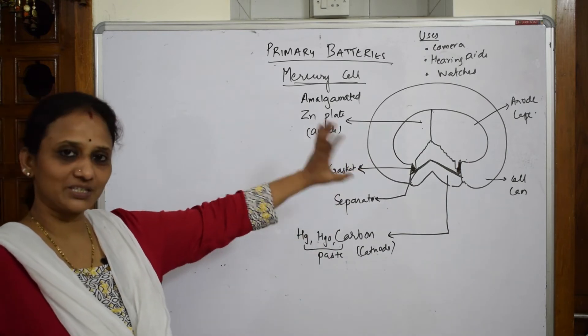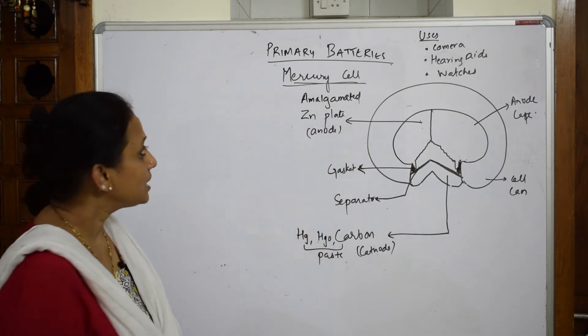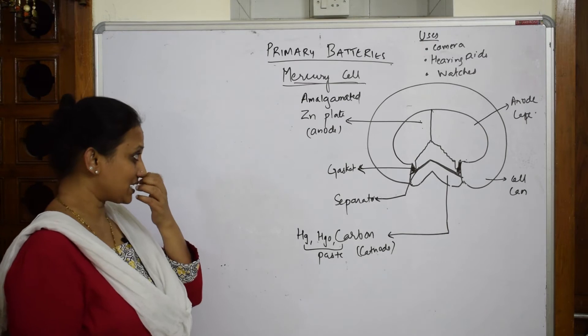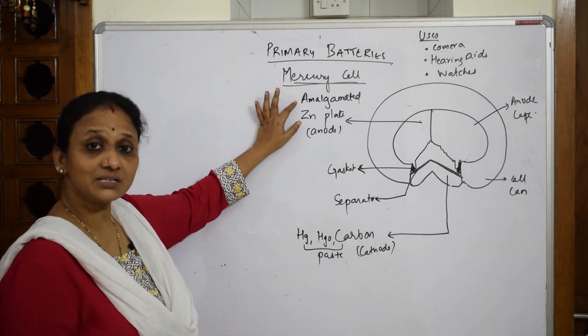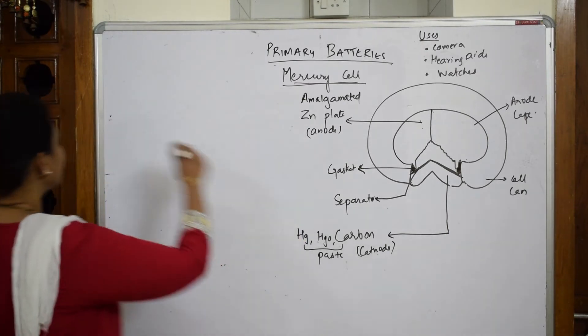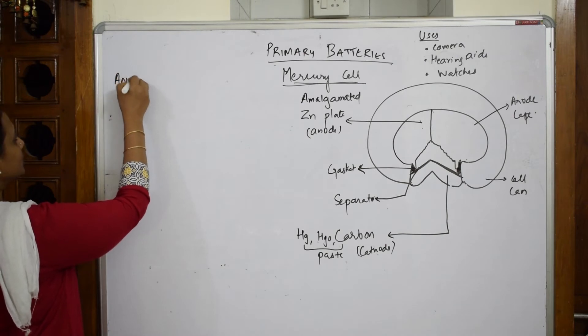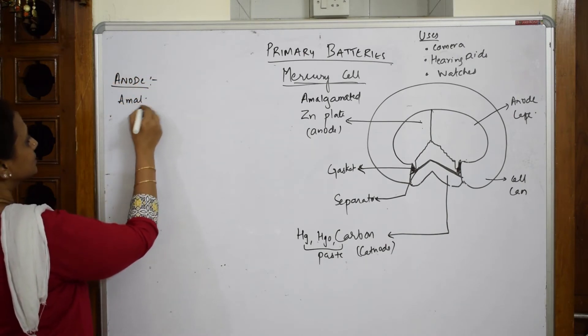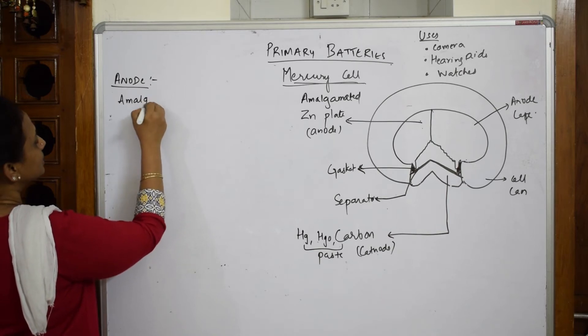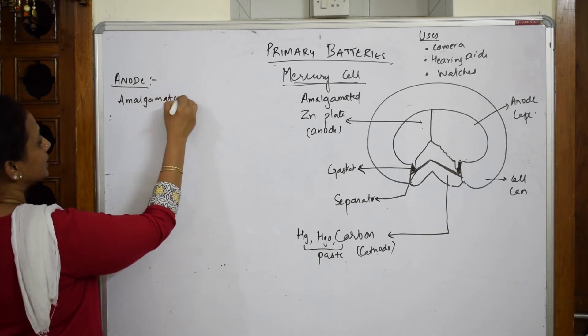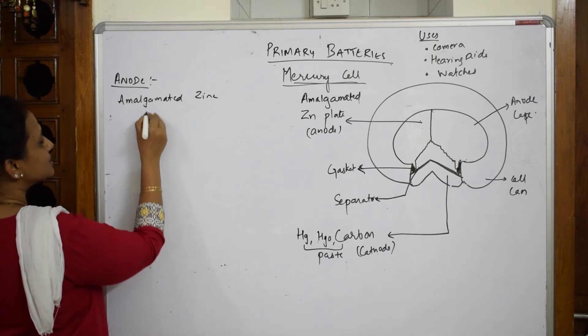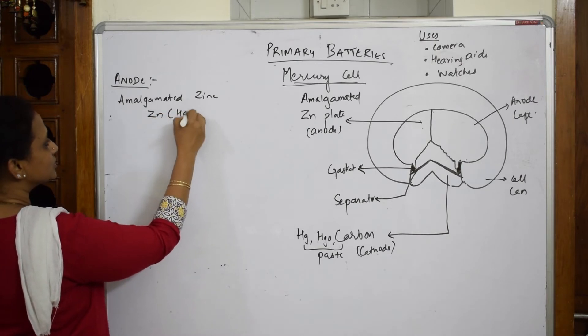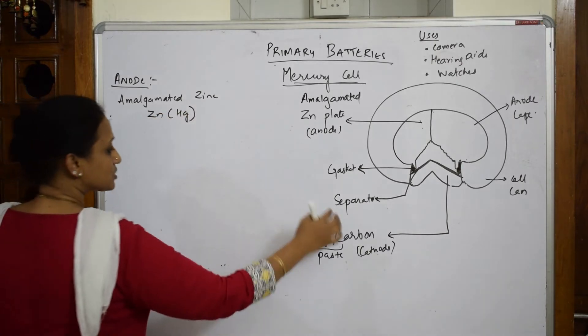In mercury cell, basically the diagram is not so perfect, I just made it to visualize. In mercury cell you first have amalgamated zinc acting as an anode. Let's write that first. Anode is amalgamated zinc, written as Zn(Hg).